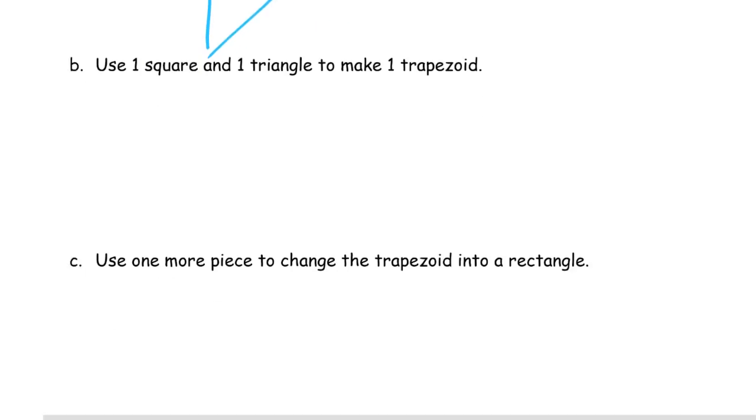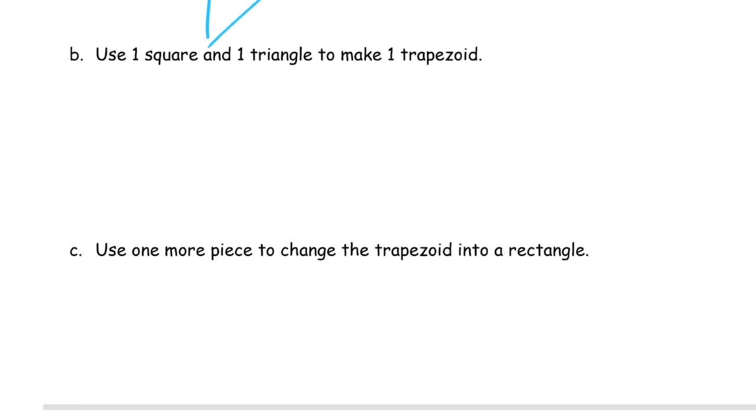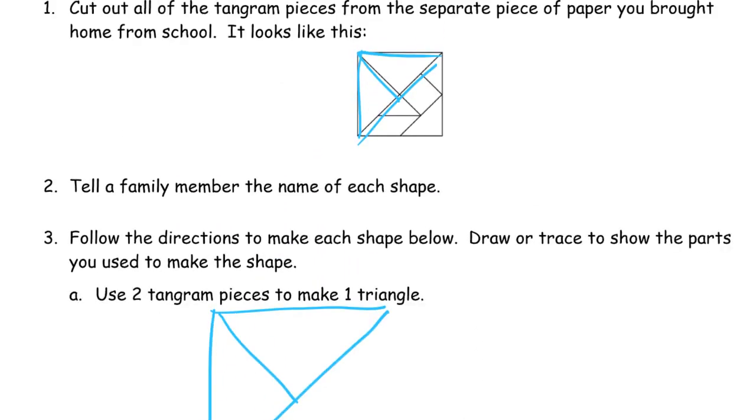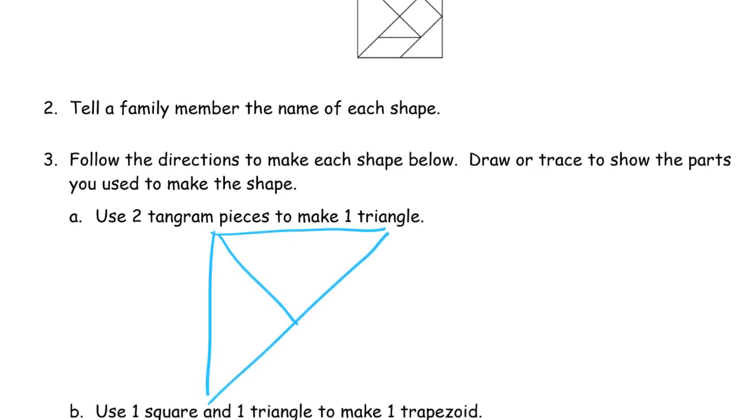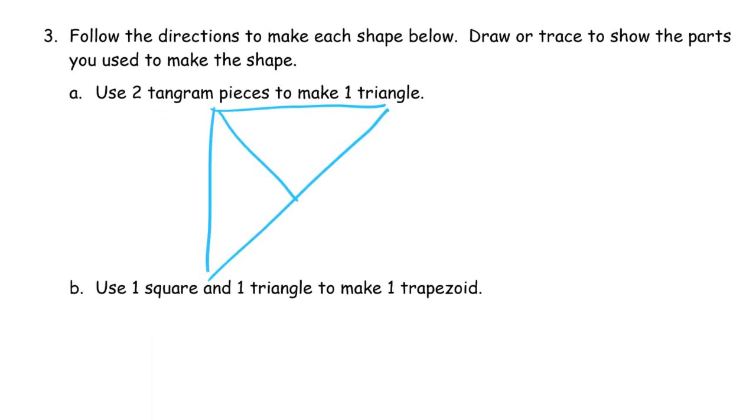And now it says use one square and one triangle to make one trapezoid. I'll give you a hint. Look at the tangram puzzle because there's two of them in that. But you might find another way to do it too.